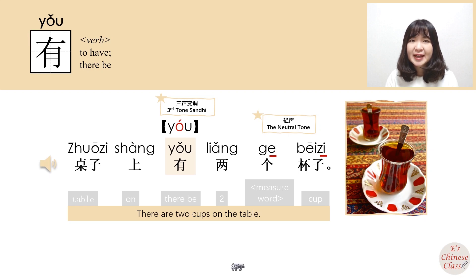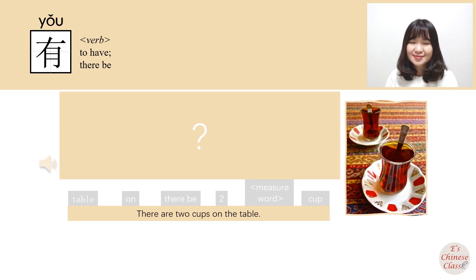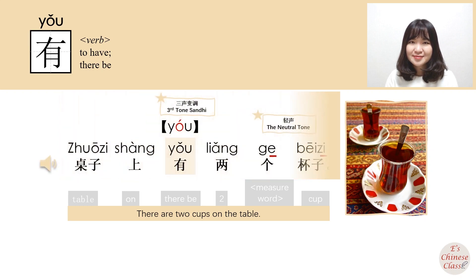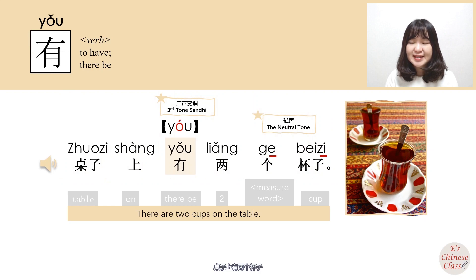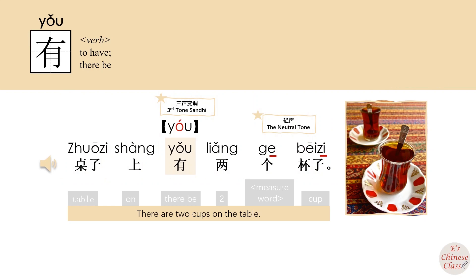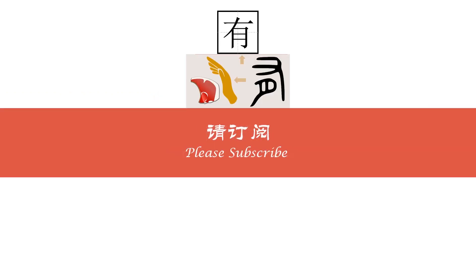桌子上有两个杯子。 (There are two cups on the table.)